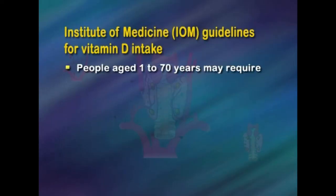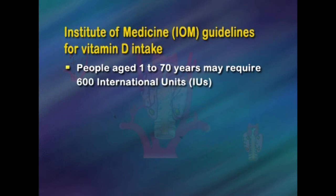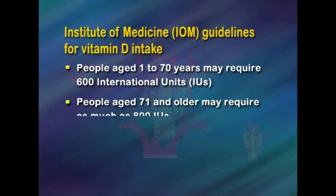For the healthy public, the Institute of Medicine guidelines for vitamin D intake are: people aged 1 to 70 years may require 600 international units, and people aged 71 and older may require as much as 800 international units of vitamin D. The IOM also recommends that no more than 4000 international units of vitamin D be taken per day. People with primary hyperparathyroidism without symptoms who are being monitored do not need to restrict calcium in their diet. Those with low calcium levels due to loss of all parathyroid tissue from surgery will need to take calcium supplements for the rest of their life.